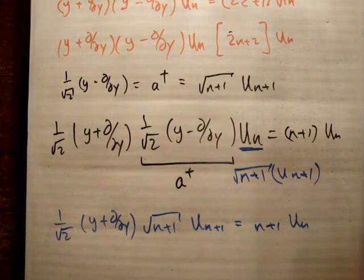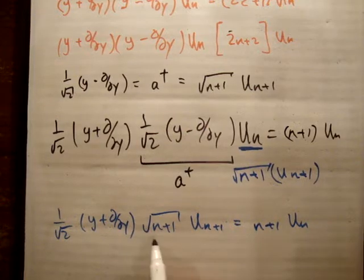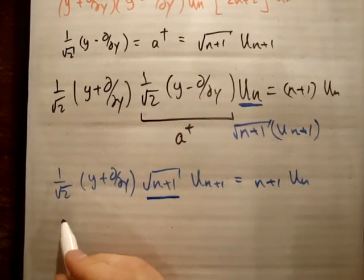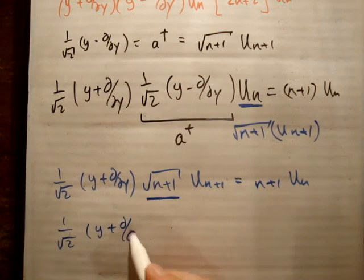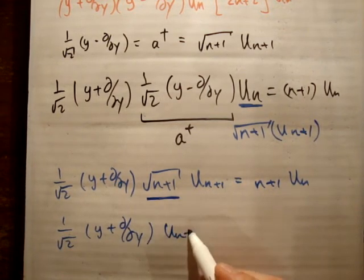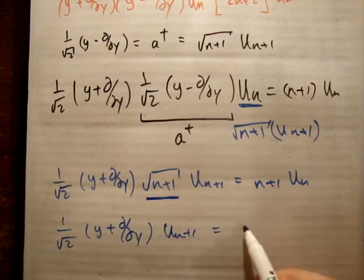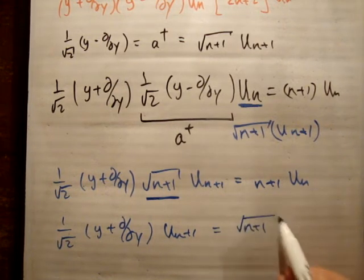So what happens if I divide across by this here? I'm going to have 1 over root 2, y plus d/dy, times UN plus 1, equals root n plus 1, UN.